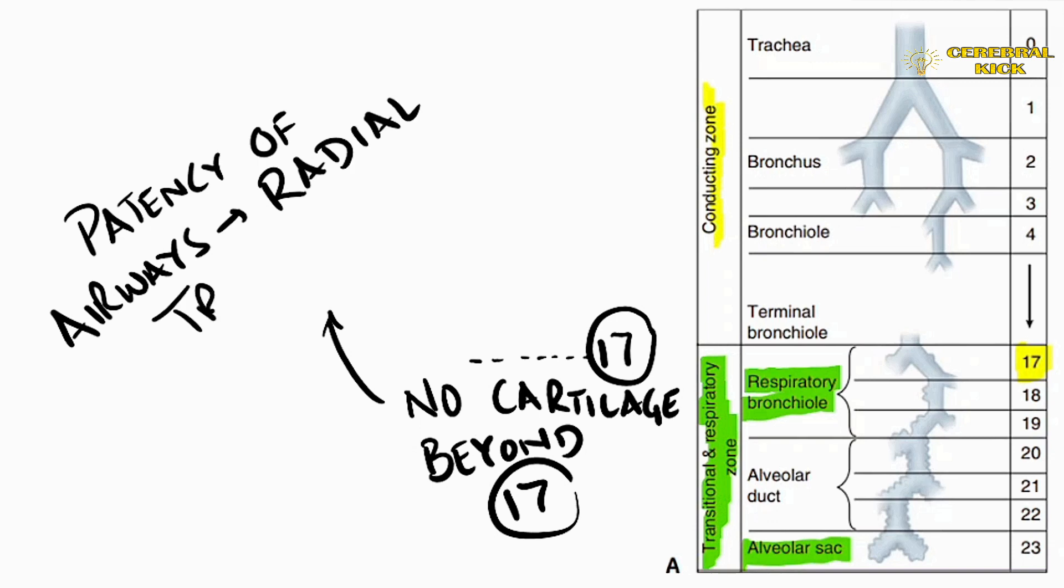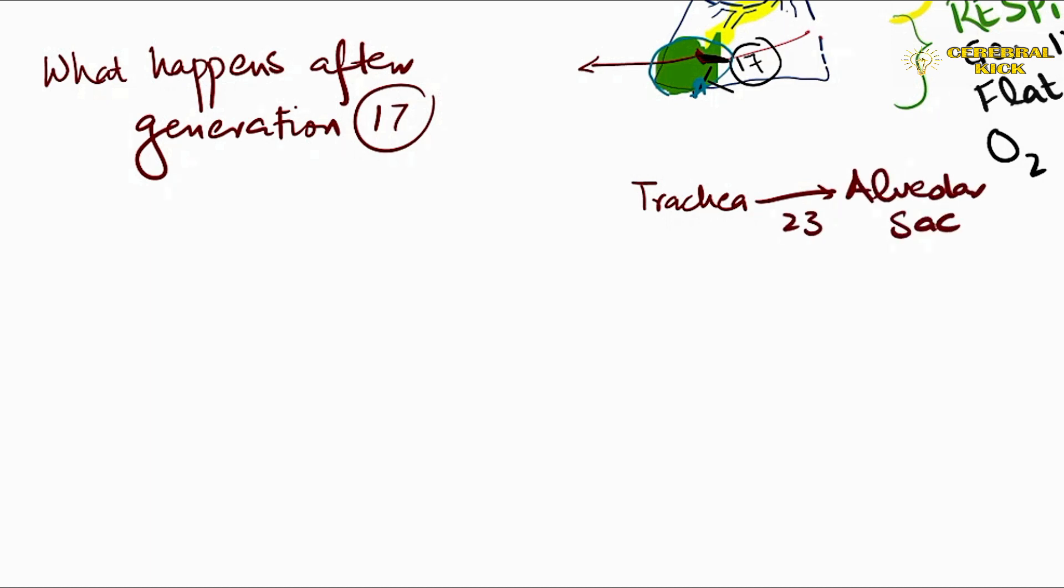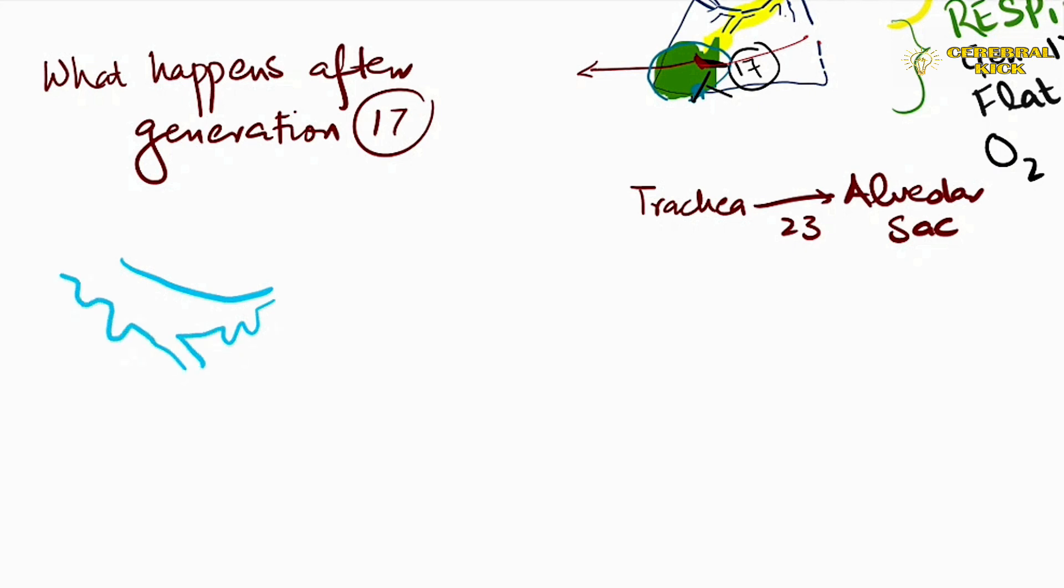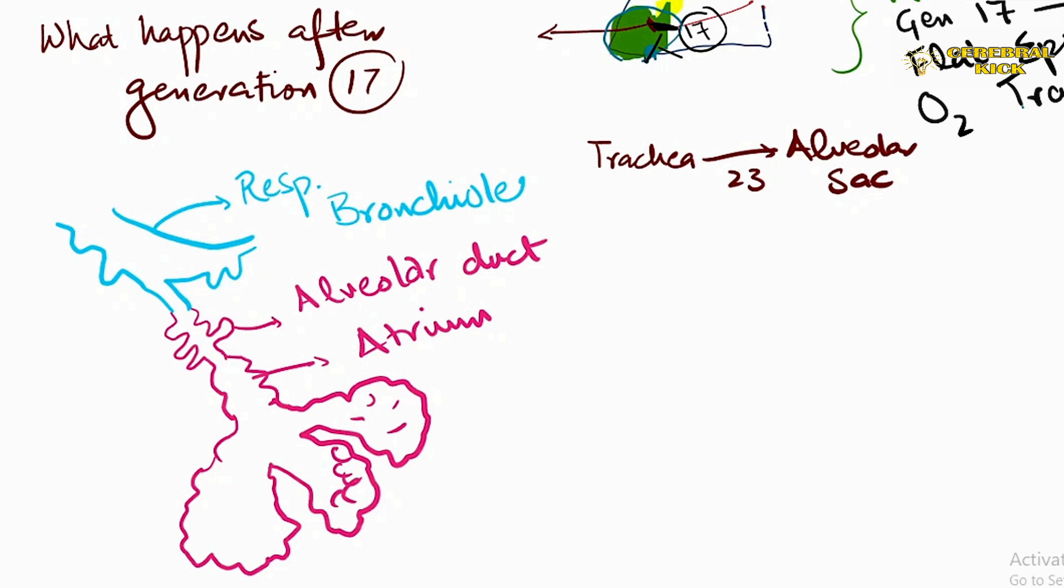We have discussed already the conducting zone. Let's head into the alveolar sacs and the respiratory zone. Let's suppose the blue colored is the respiratory bronchial marked in flat epithelium and branching. One of its branches marked in pink makes alveolar ducts all the way down to the atrium and then the subsequent alveolar sacs. We've discussed that 23rd generation is where the alveolar sacs lie. Each alveolar sac has around approximately 17 alveoli.